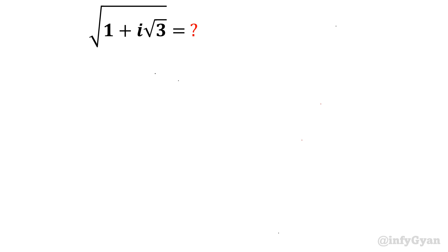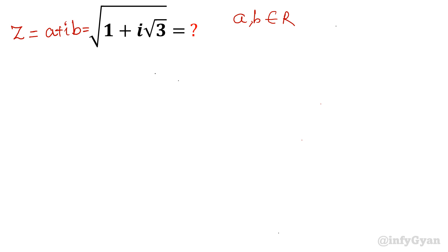So what I am going to do here: I will put that number equal to z, and z is equal to a plus ib, where a and b are real numbers. So let us start.